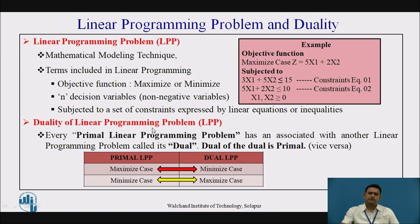The dual of the linear programming problem: every primal linear programming problem has an associated linear programming problem called the dual. The dual of the dual is the primal and vice versa. If the primal problem is a maximization case, its dual will be a minimization case, and if the primal is a minimization case, its dual will be a maximization case.